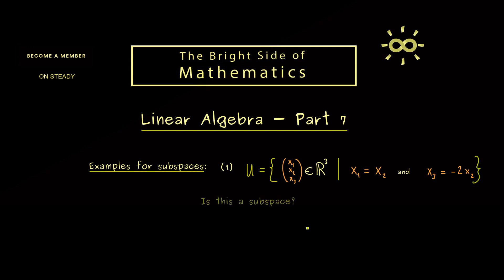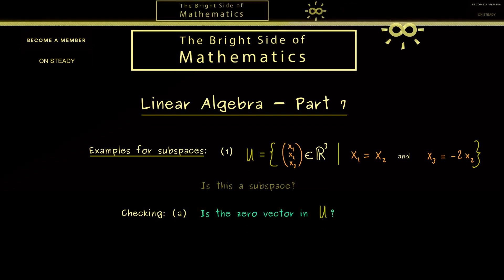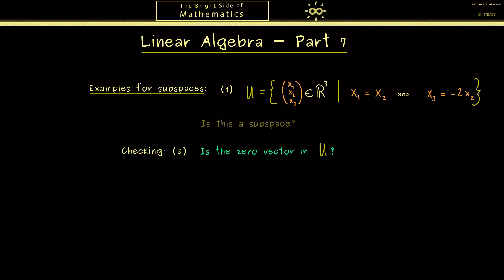Now the question we want to answer is: is this set U a subspace in R³? In fact, if you are already familiar with linear algebra you might answer this question immediately. However you still need to write down a proof for it. Now we will do this here by checking the 3 steps from the last video. The first step is checking if the zero vector is actually in U.